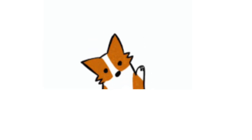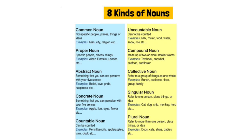Hi guys, welcome back to my YouTube channel. On today's video I'm going to explain about the eight kinds of noun. First we have common noun. A common noun is a non-specific person, place, thing or idea. Example: men, city, religion, etc.